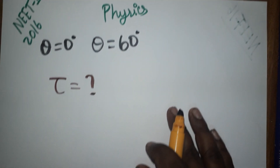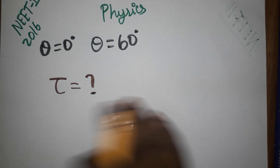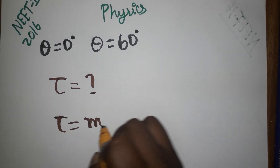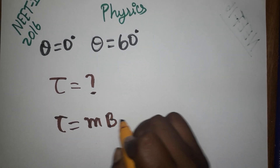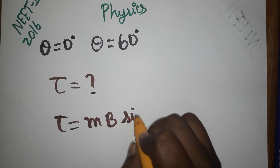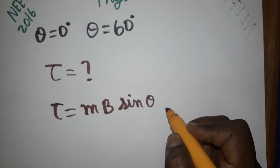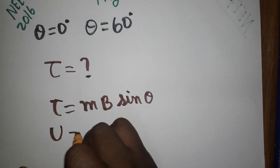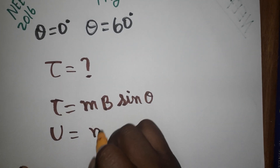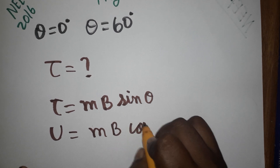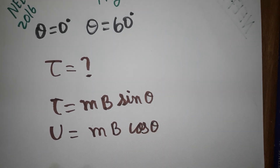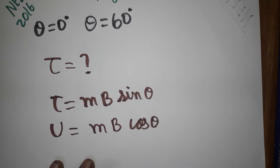I will give both formulas. Torque is equal to MB sin θ, and work done is equal to MB cos θ. These are very simple formulas. Initially the angle is zero, then it rotates to 60 degrees.